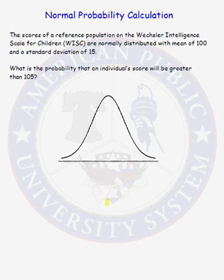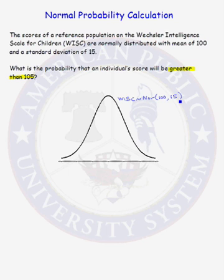We want to know what is the probability that an individual score will be greater than 105. The first thing we should do is label our normal distribution curve. We know the WISC scores are normally distributed with mean 100 and standard deviation 15. We label the curve with the mean, 1, 2, and 3 standard deviations above the mean, and 1, 2, and 3 standard deviations below the mean.